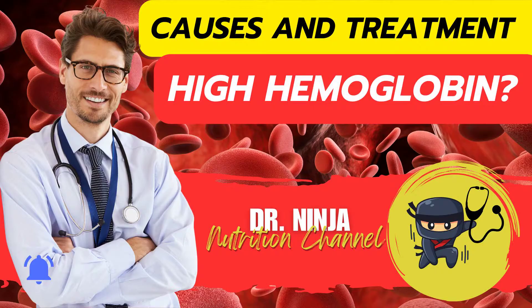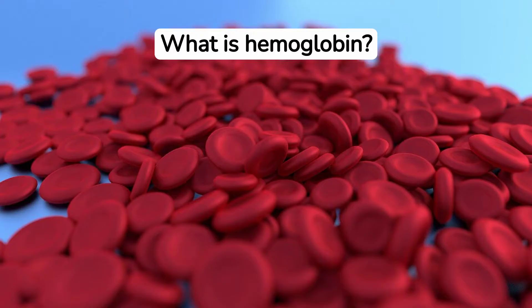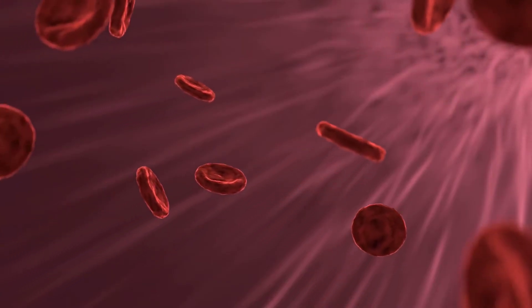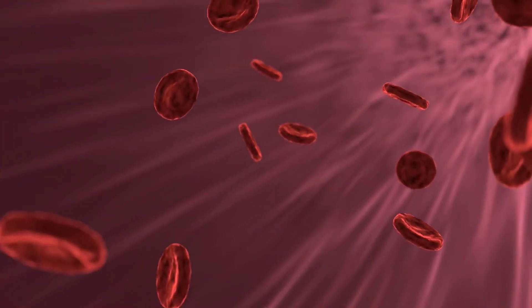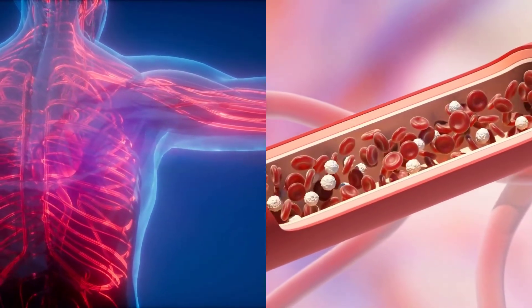In this video we will talk about high hemoglobin. We will discover the most common causes of this condition, the symptoms to look out for, and the treatment options available. Hemoglobin is a protein present in the red blood cells of the human body which has the function of transporting oxygen from the lungs to the tissues and organs. Without it, our tissues and cells would not be able to get enough oxygen to generate energy and function properly. It is essential for life and a key indicator of blood health.